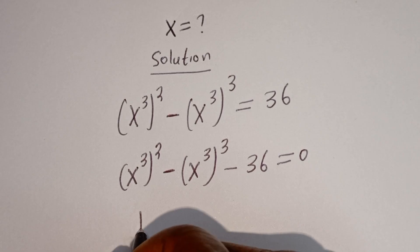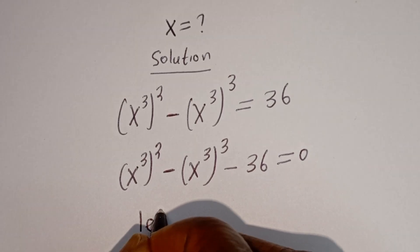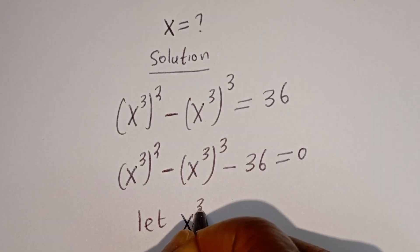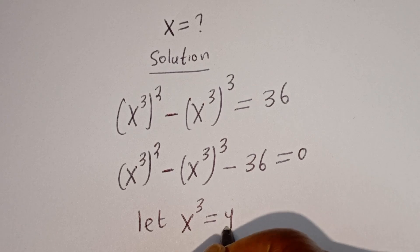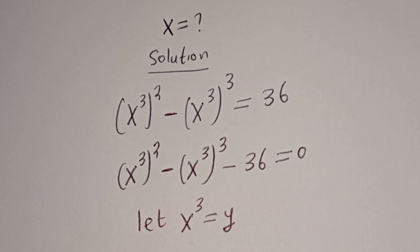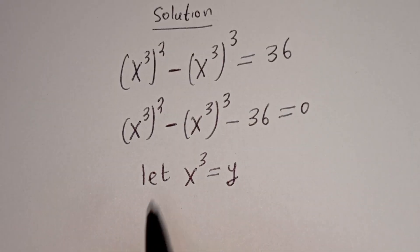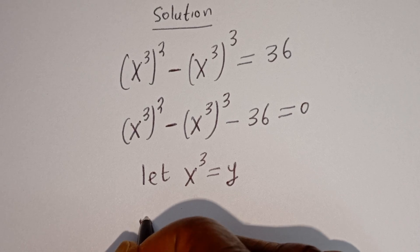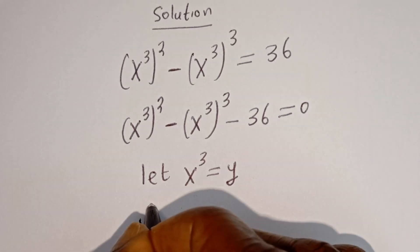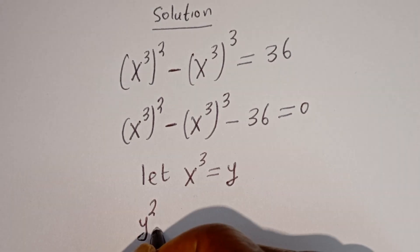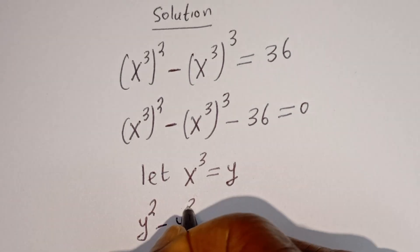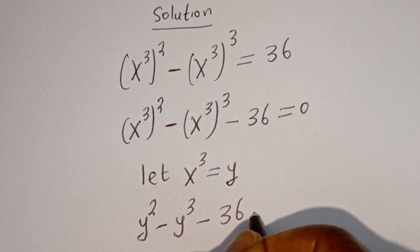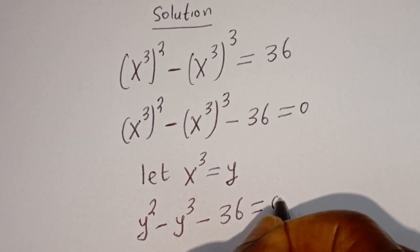We have s to the power of 3 all squared minus s to the power of 3 all to the power of 3. Bringing 36 to this side, it becomes minus 36, equal to 0. Now let s to the power of 3 equal y.